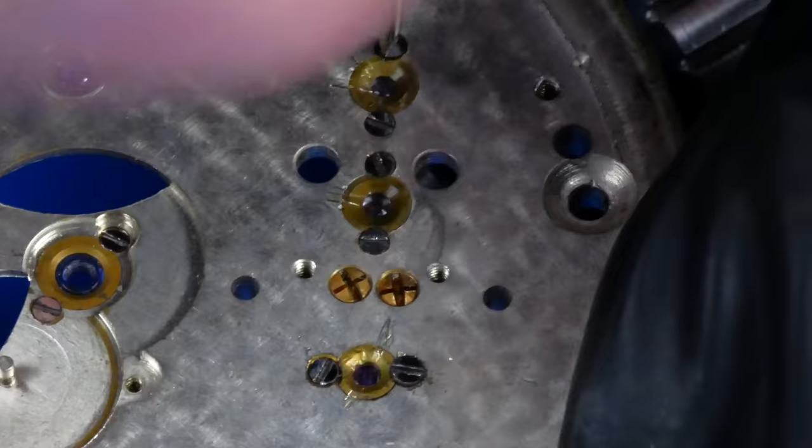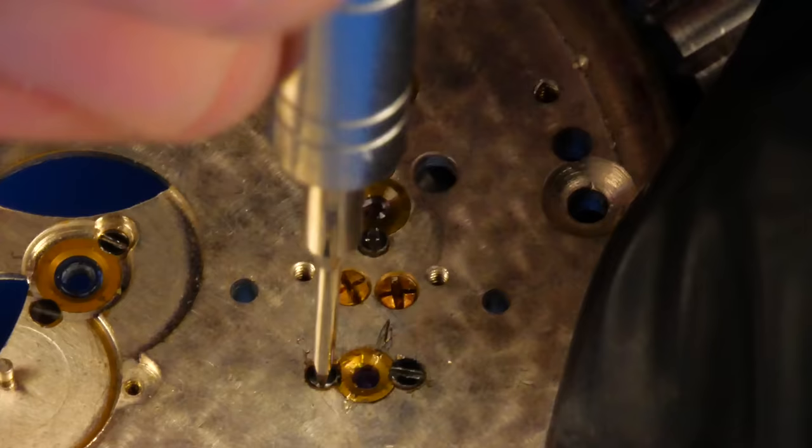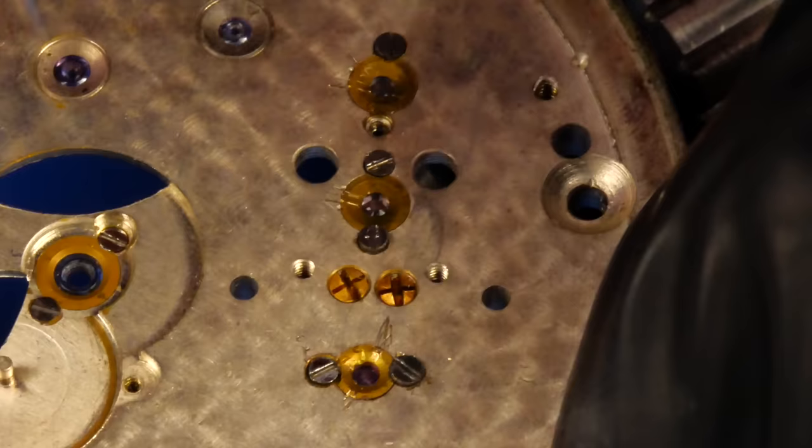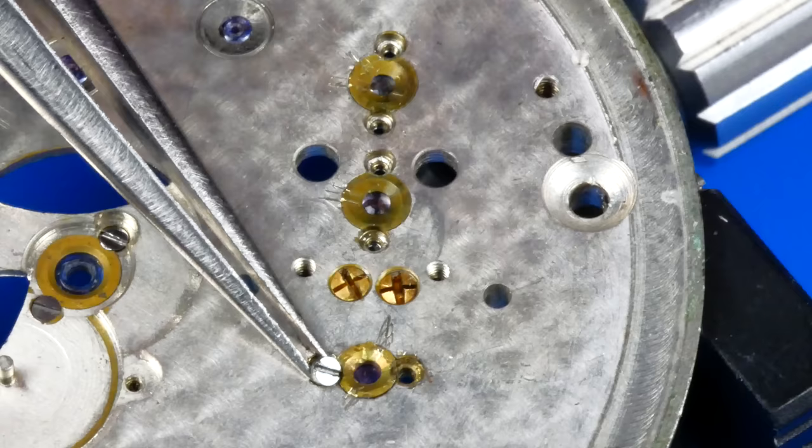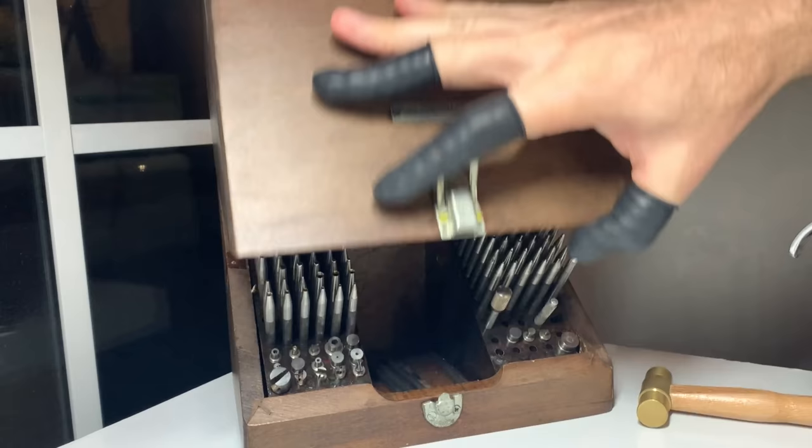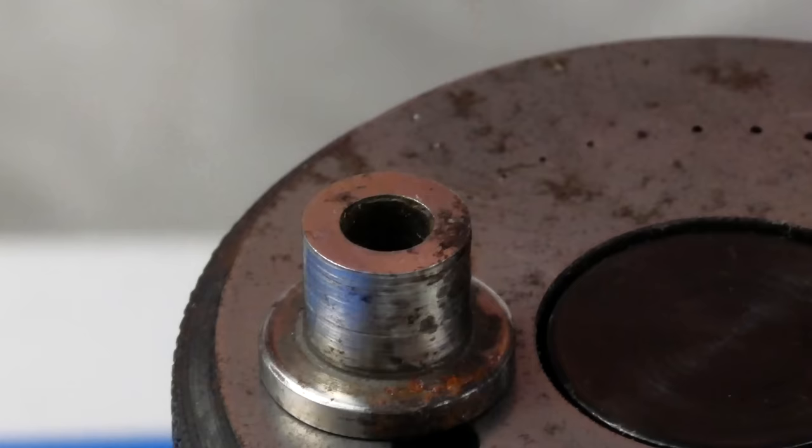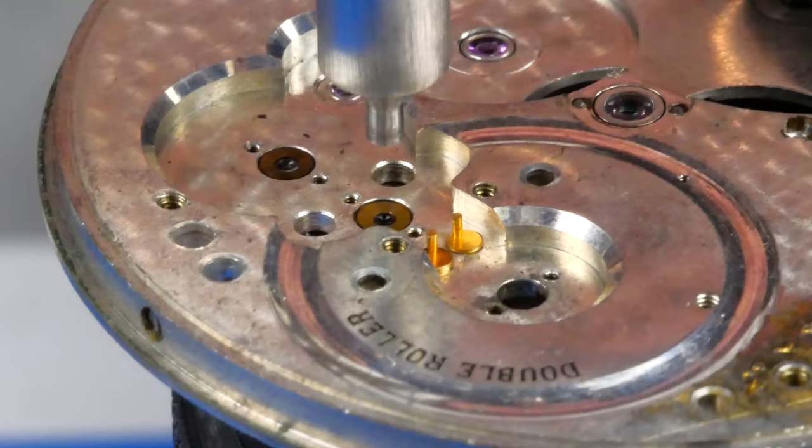The dial side jewels for the balance, pallet fork, and escape wheel are cast. Each of them have been scored, presumably to remind the service person which one goes where. With the screws removed, the jewels can be punched out with the help of the staking set. Each pair of settings is a capped jewel and a hole jewel.